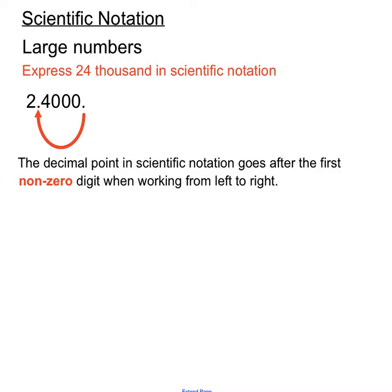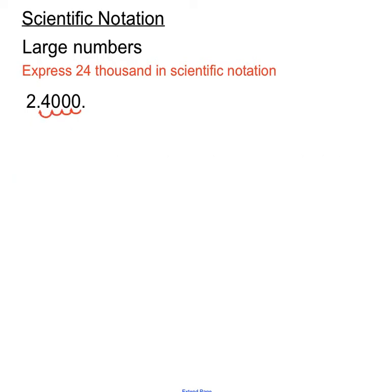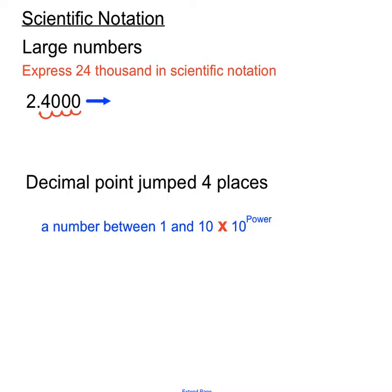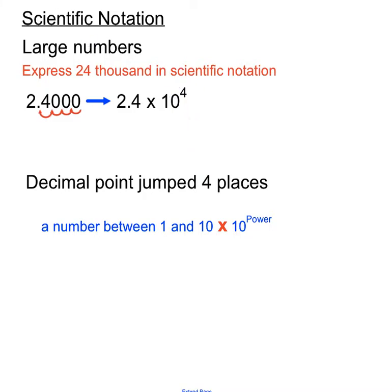We'll have moved that decimal point 1, 2, 3, 4 place values — 4 jumps to the left. So the decimal point jumped 4 places, and in the end the number we want to express instead of 24,000 is 2.4 times 10 to the power of 4. The fact that we jumped 4 places creates that 4 as the power of 10.